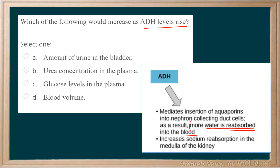So when more water is reabsorbed, that will increase the blood volume. The answer that would increase is blood volume — nothing to do with the amount of urine, urea concentration, or glucose levels. As ADH levels increase, blood volume will also increase.